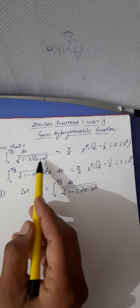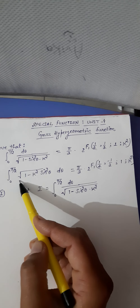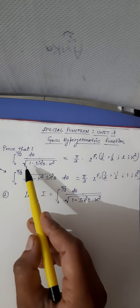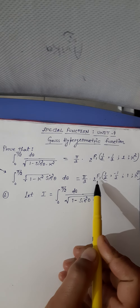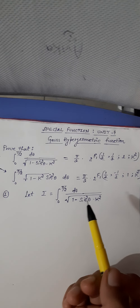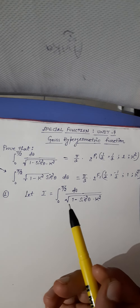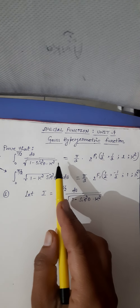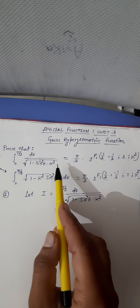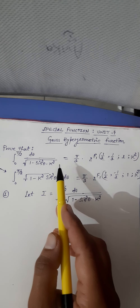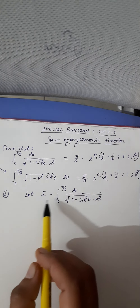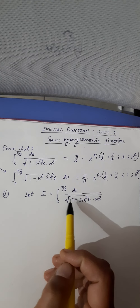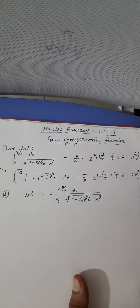The left-hand side is this and the right-hand side is this. The first question is given and second question is also there — both methods are the same. We will solve one question and the second you will try yourself; if there is a problem we will discuss it. For the first question, according to integral representation, we let capital I equal to integral from 0 to π/2 of dθ upon under the root of (1 minus sin²θ · k²).